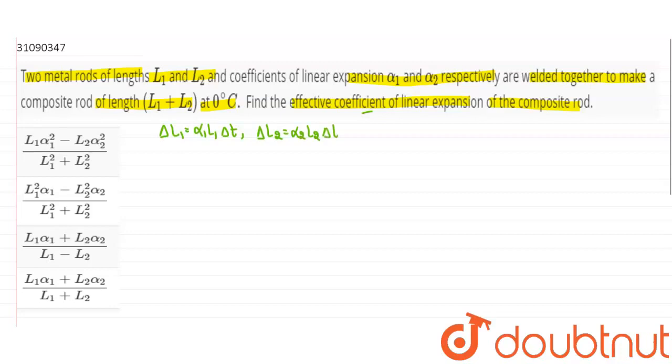So, we will write delta L, how much will it be? Alpha L1 plus L2. Sorry, this is L. Because here, total length is equal to L1 plus L2, alpha delta t.